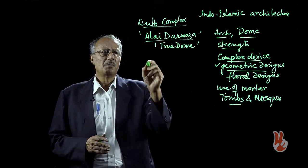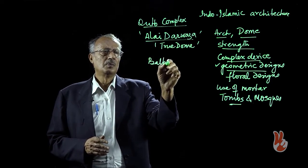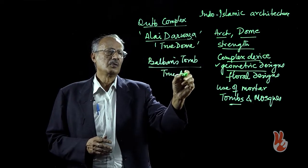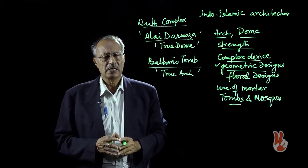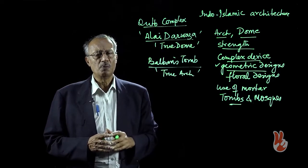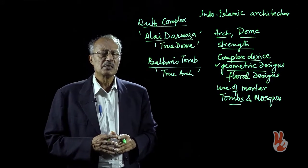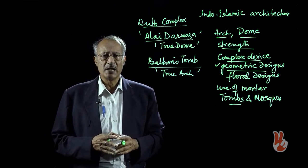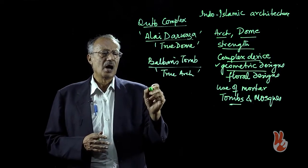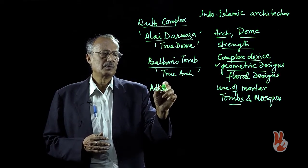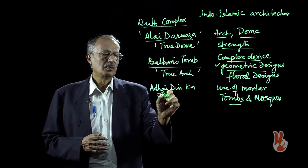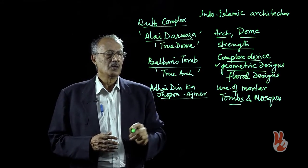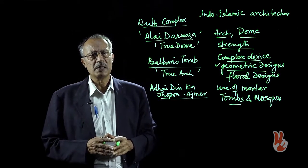When we see Balban's tomb, we find the use of a true arch for the first time. Just as we see in the Qutub complex the use of dome as well as the arch. Apart from this, some of the earlier buildings which came up due to the blending of Indian and Islamic styles include the Adhai Din Ka Jhonpra at Ajmer, which again reflects the Islamic features of building construction.